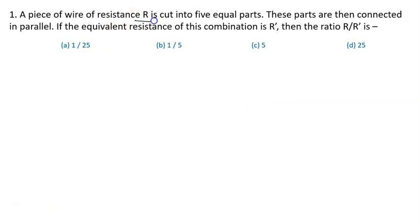A piece of wire of resistance R is cut into 5 equal parts. So each part must be having the resistance of R by 5. These parts are then connected in parallel.